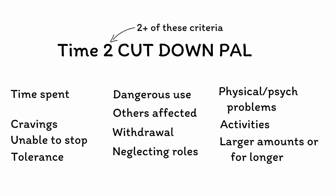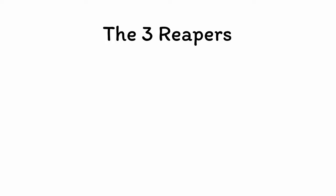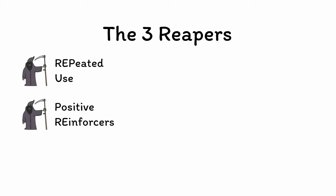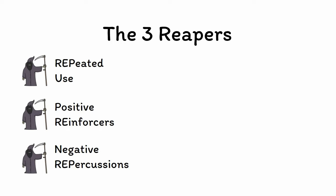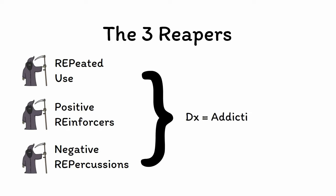However, these 11 criteria are a lot to remember, and you can recognize the overall pattern of addiction using just three things. We'll refer to these as the three reapers: repeated use of positive reinforcers despite negative repercussions. If those words describe the pattern of someone's behavior, then you can diagnose addiction. Let's look at each of the three reapers more closely.